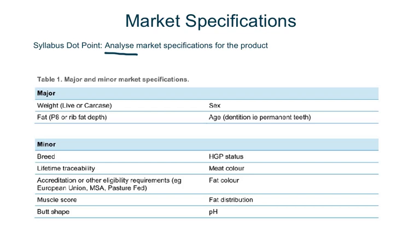Fat distribution and the pH of meat are also minor specifications, again covered in a previous session.